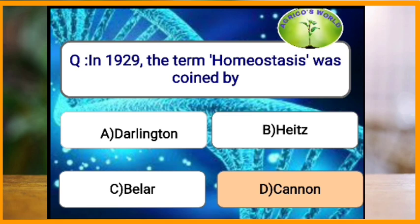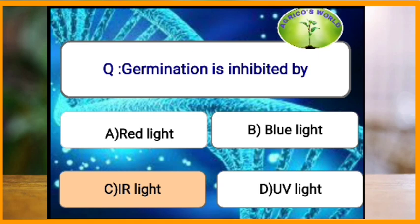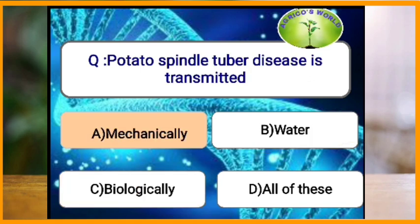Germination is inhibited by which of the following? In the given options, germination is inhibited by infrared light. Potato spindle tuber disease is transmitted by which means?